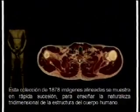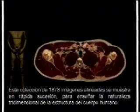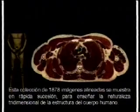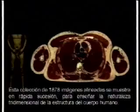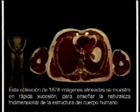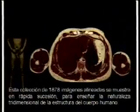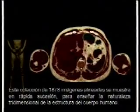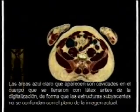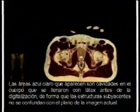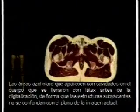This seminal collection of 1,878 aligned images are displayed in rapid succession to show the three-dimensional nature of the internal structure of the human body. The light blue areas which appear throughout the body were filled with latex prior to imaging so that underlying structures would not be confused with the current image plane.